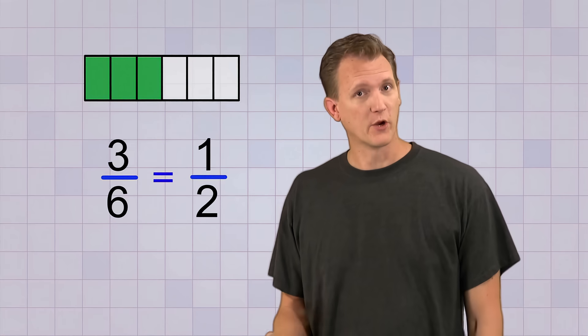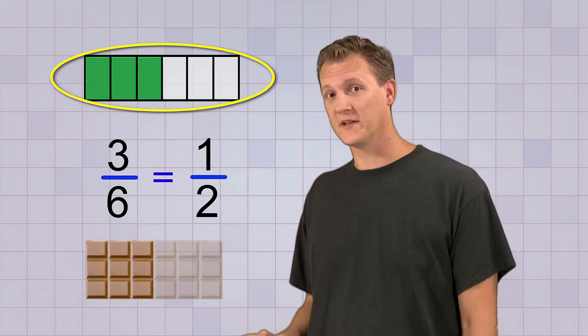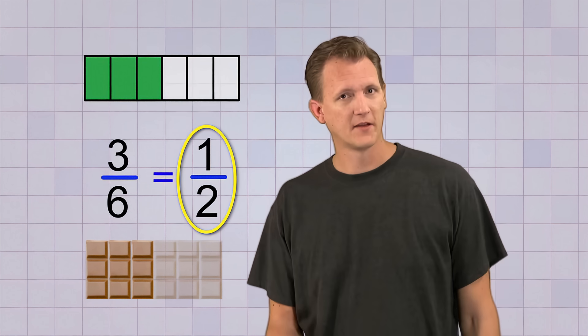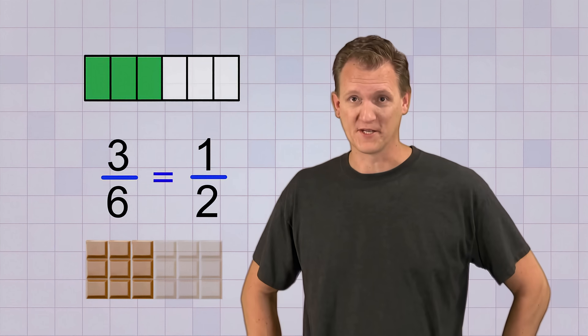So what if someone gives you the fraction 3 over 6, like 3 sixths of a candy bar? Well, we know from our picture that that means they're really giving you 1 half. But how can we show that using math and not pictures? Well, that's where factoring comes in.